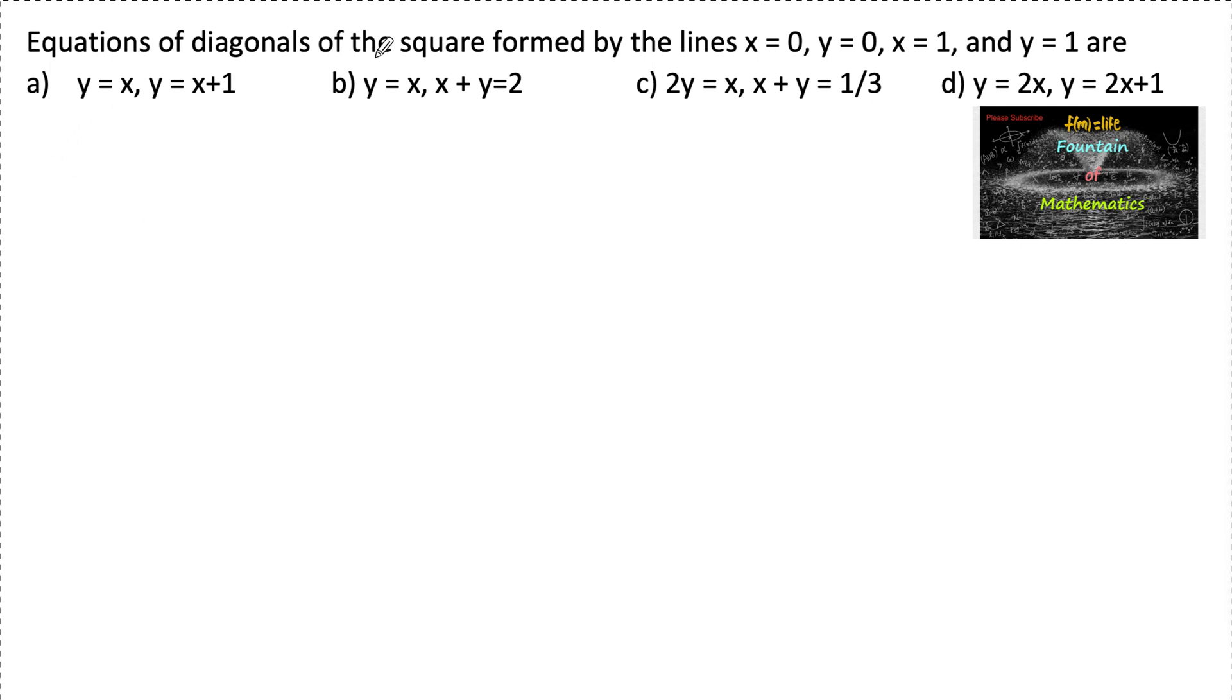Equations of diagonals of the square formed by the lines x is equal to 0, y is equal to 0, x is equal to 1 and y is equal to 1.